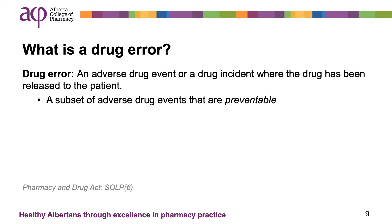A drug error is a subset of an adverse drug event that is preventable. With drug errors, the drug is confirmed to have been released to the patient, whereas a drug incident includes both those events in which the mistake is caught prior to release to the patient and those events where the drug is released to the patient. It is important to note that learning opportunities exist for both scenarios, and the pharmacy team is encouraged to apply incident analysis to drug incidents, drug errors, and ADEs.